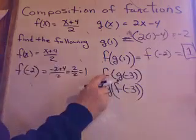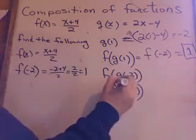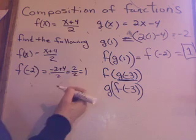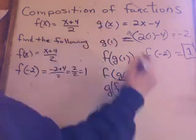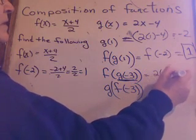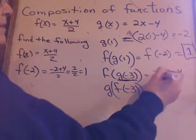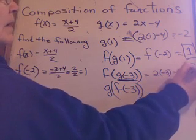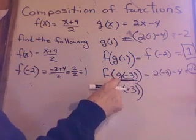How about this one? f of g of minus 3. Go to the inside first. Let's find g of minus 3. Go to the g equation. And I do 2 times minus 3 minus 4. Minus 6 minus 4, negative 10. We've got negative 10 for the g of minus 3. That becomes a substitution.